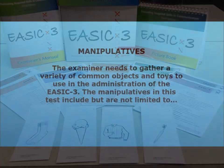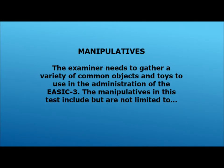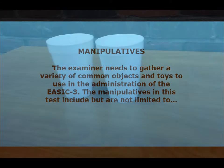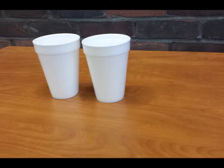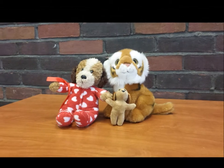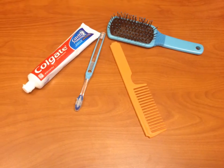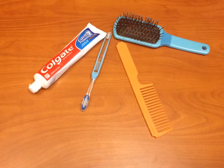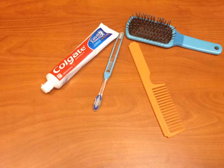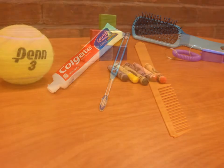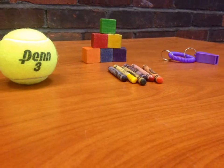The examiner needs to gather a variety of common objects and toys to use in the administration of the eCIC 3. The manipulatives include, but are not limited to, two cups, stuffed animals, toothpaste, a toothbrush, a comb, a brush, a tennis ball, colorful blocks, crayons, and a whistle.